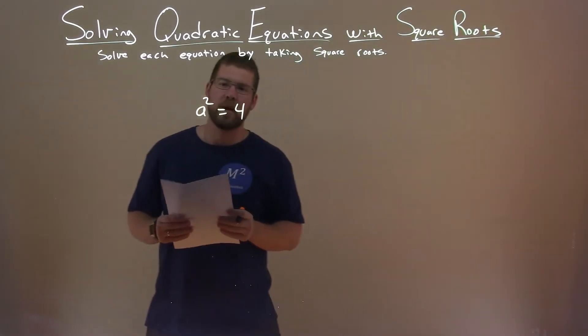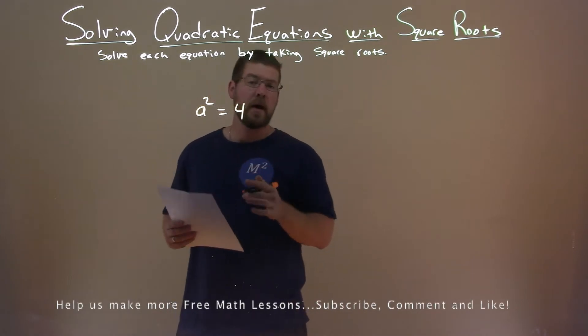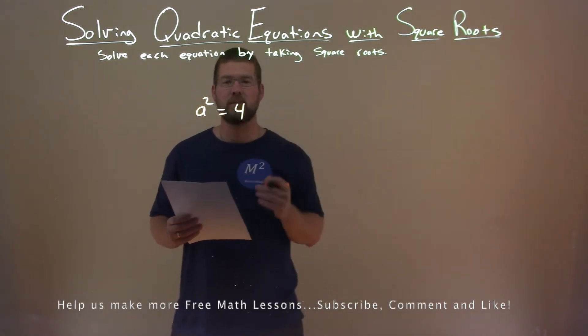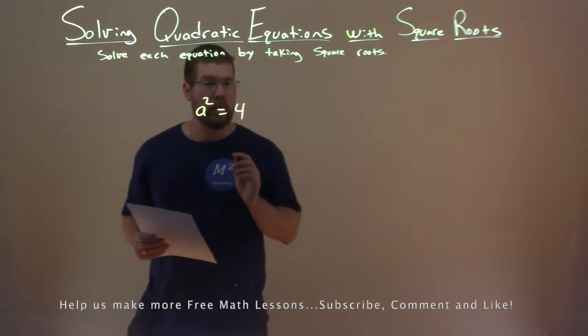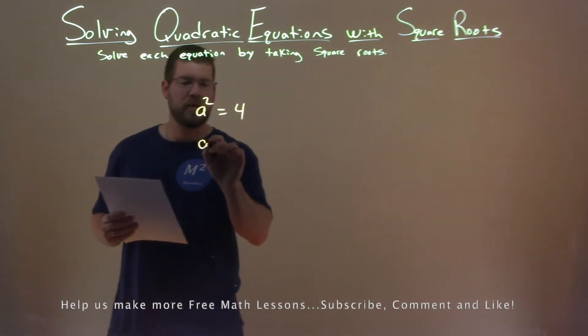We're given this problem right here, a squared equals 4, and we want to solve this by taking the square root. Well luckily our variable a is already pretty much by itself, it's just squared.